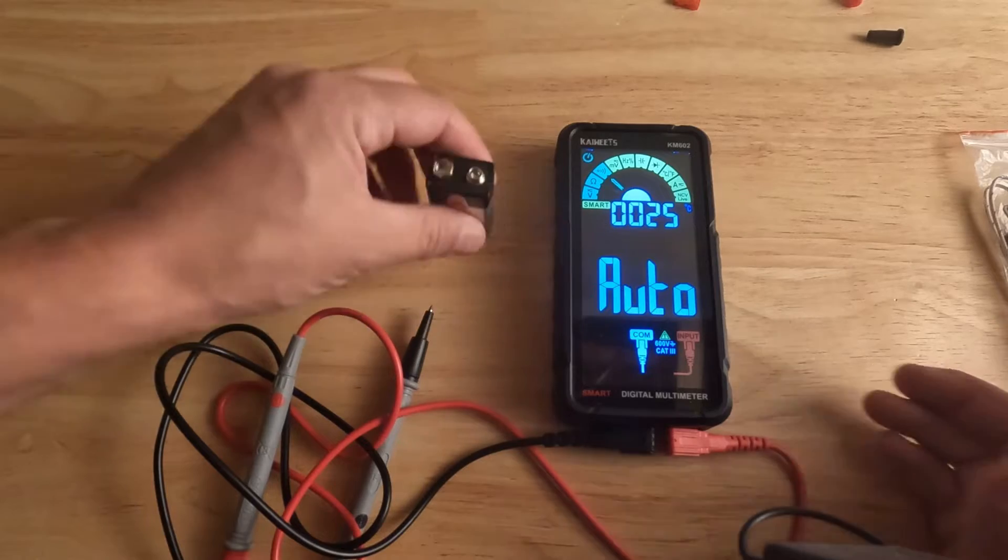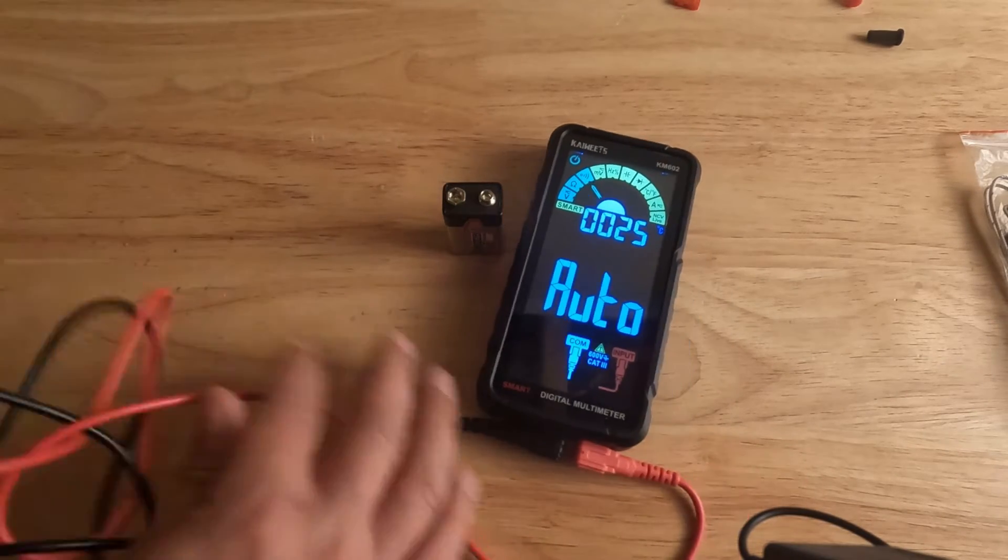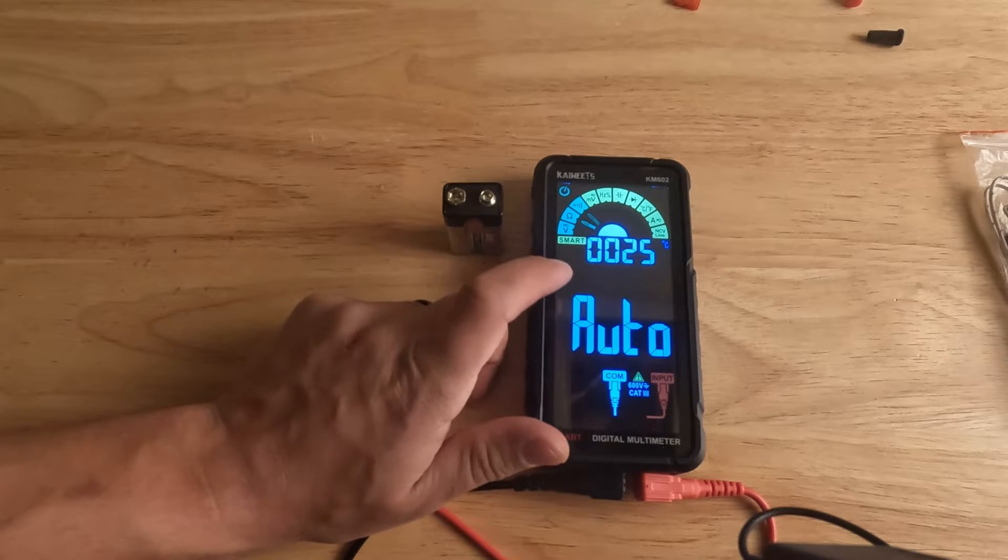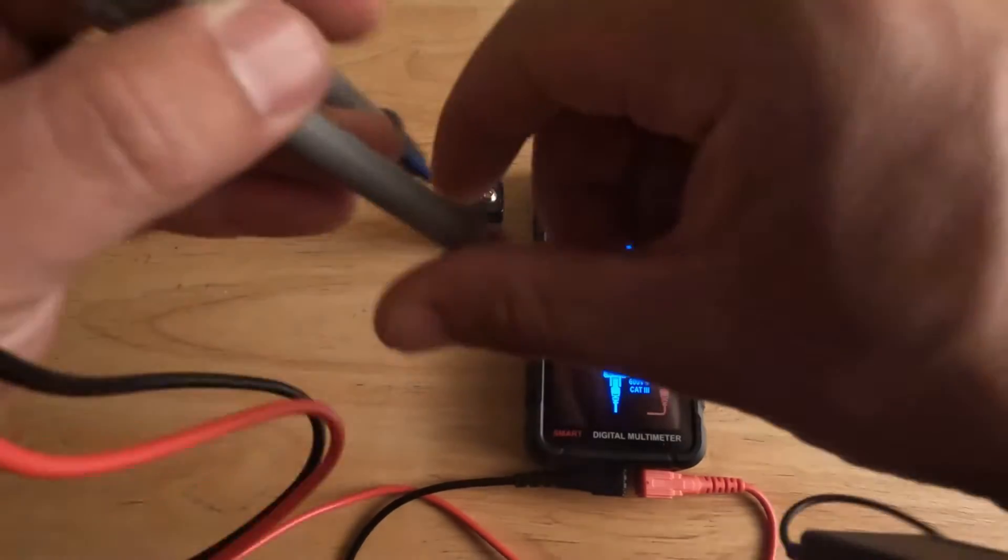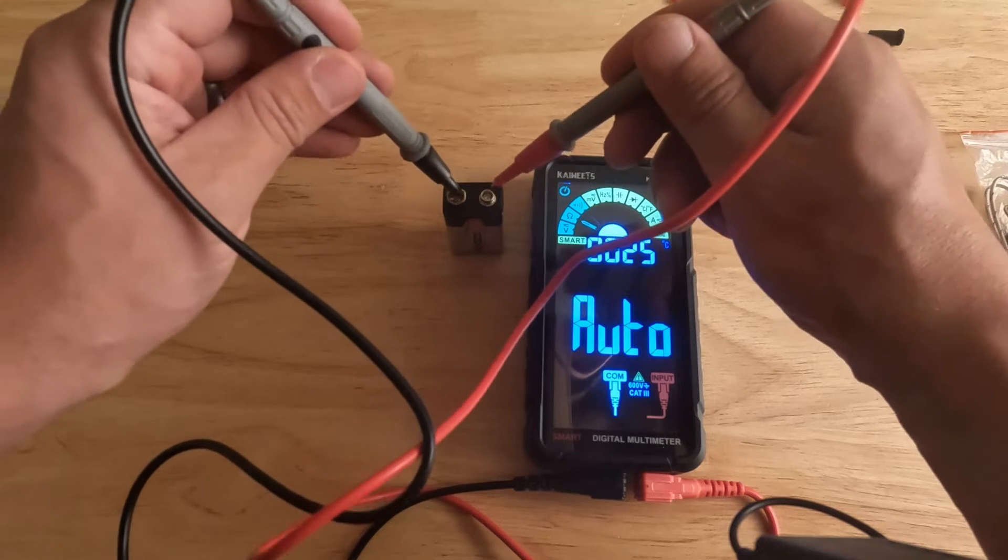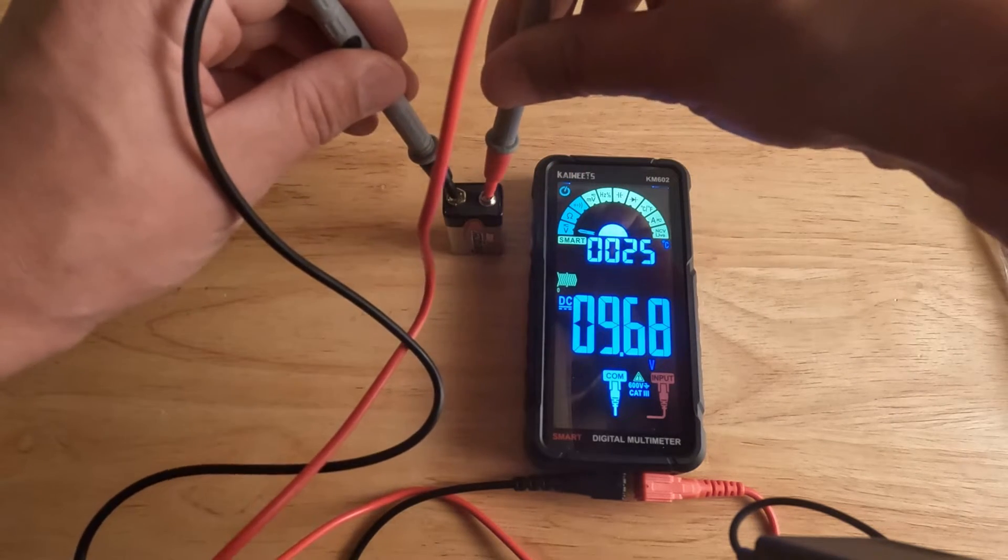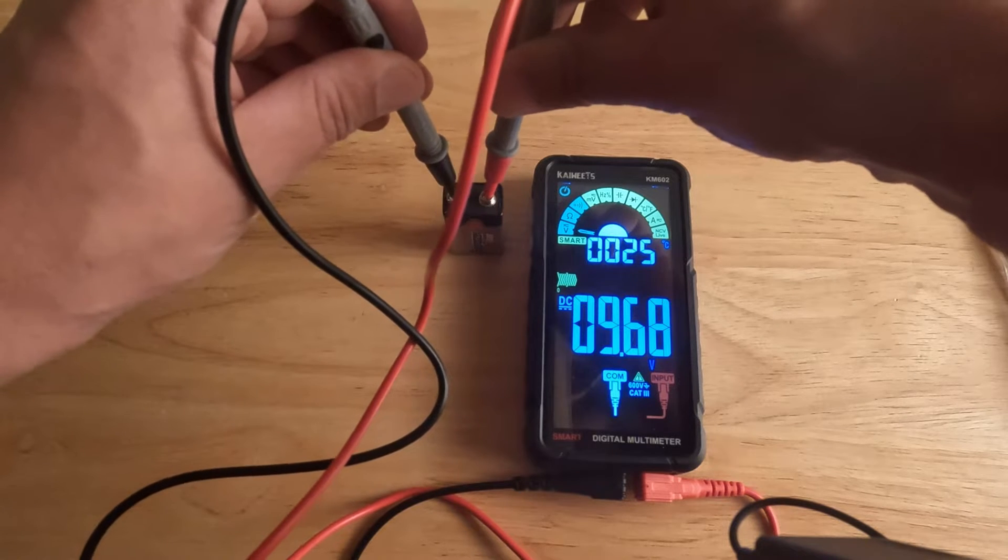We just have a 9-volt battery that I know is brand new. We're just going to test it. It should come up that it should tell you that it's direct current, it should say DC, and then it should automatically show you the voltage. You can see the voltage is displayed, 9.68 volts DC.